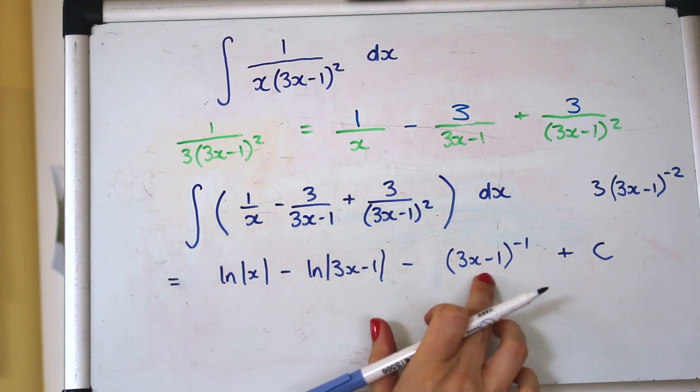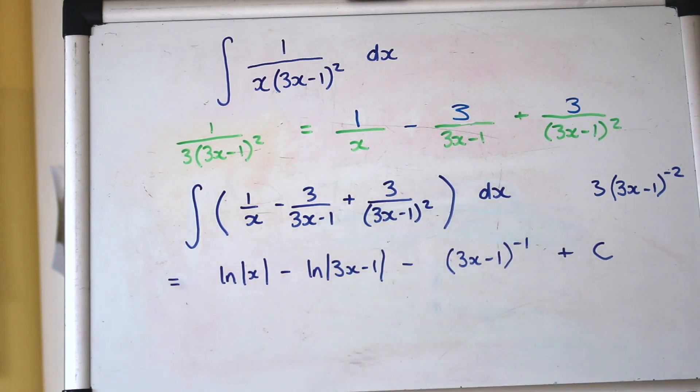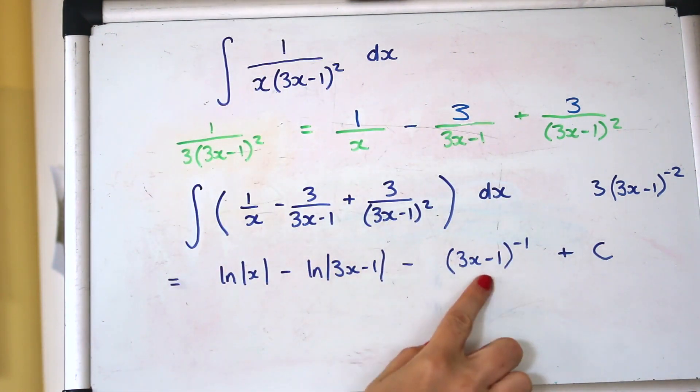And that's the final answer you can write that back down at the bottom so 1 over (3x minus 1) if you want to and again we've got a plus C because there's no limits. So do watch out for that that's a bit sneaky. Well done if you got that right.